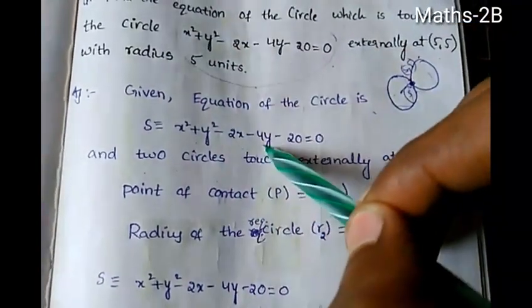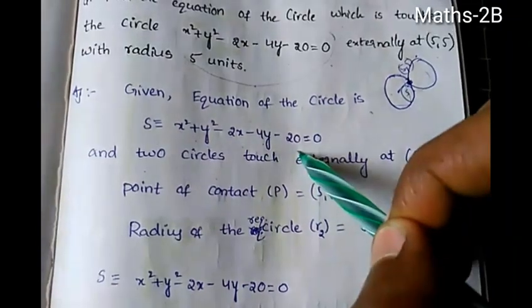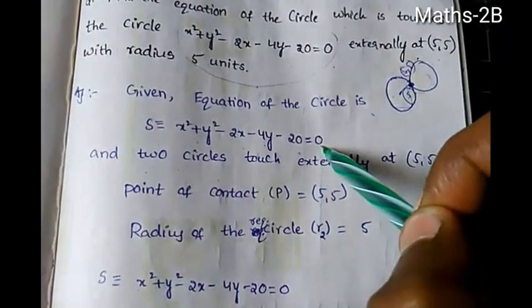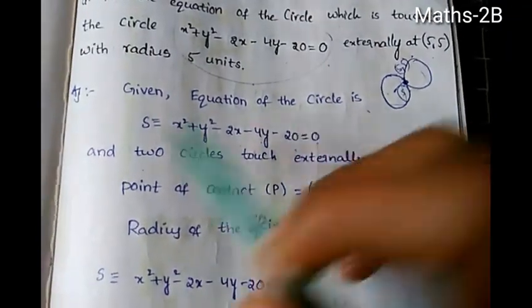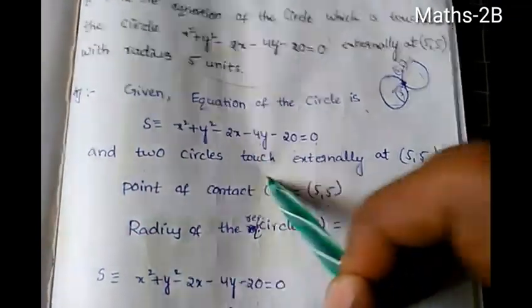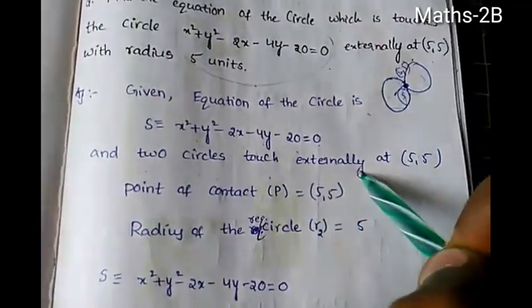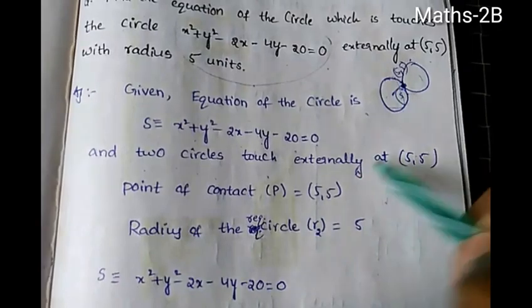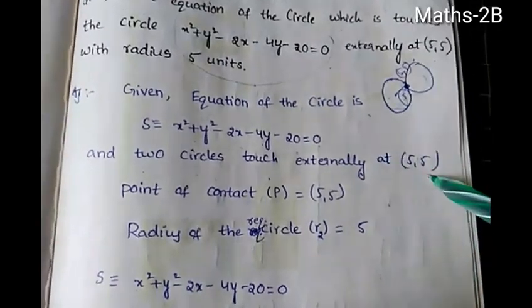The given equation of the circle is x² + y² - 2x - 4y - 20 = 0, and the two circles touch externally at (5, 5).